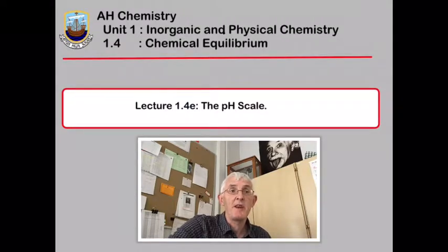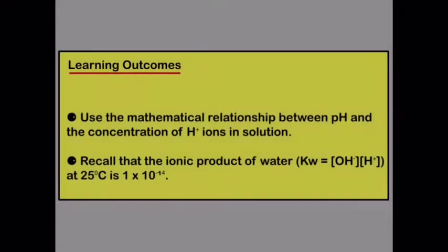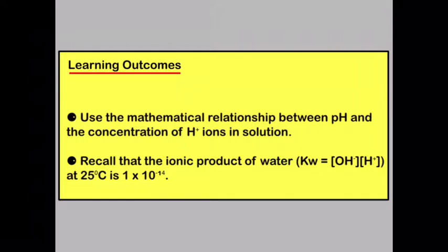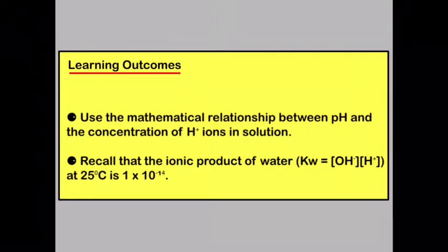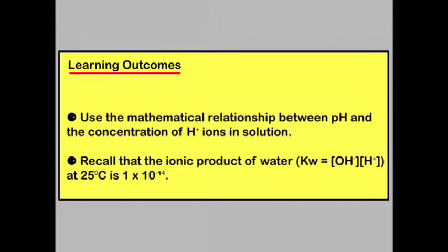In this lecture we're going to be looking at the pH scale. By the end of the current lecture you should be able to use the mathematical relationship between pH and the concentration of H+ ions in solution. You should also be able to recall that the ionic product of water at 25 degrees C is 1 times 10 to the minus 14.